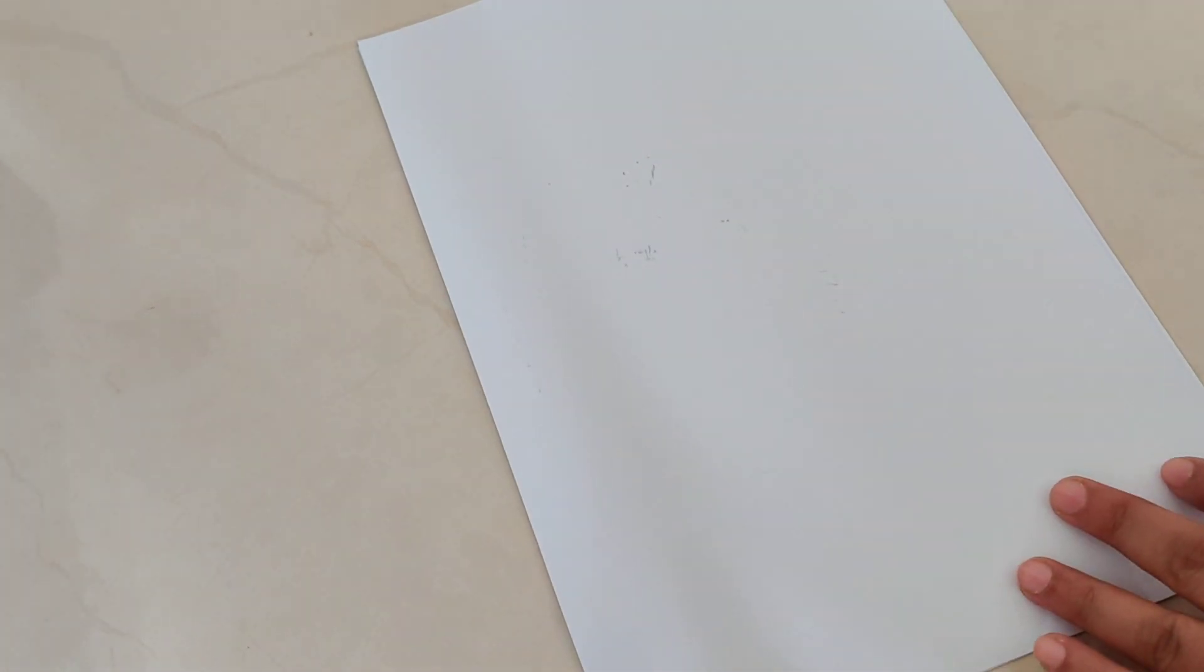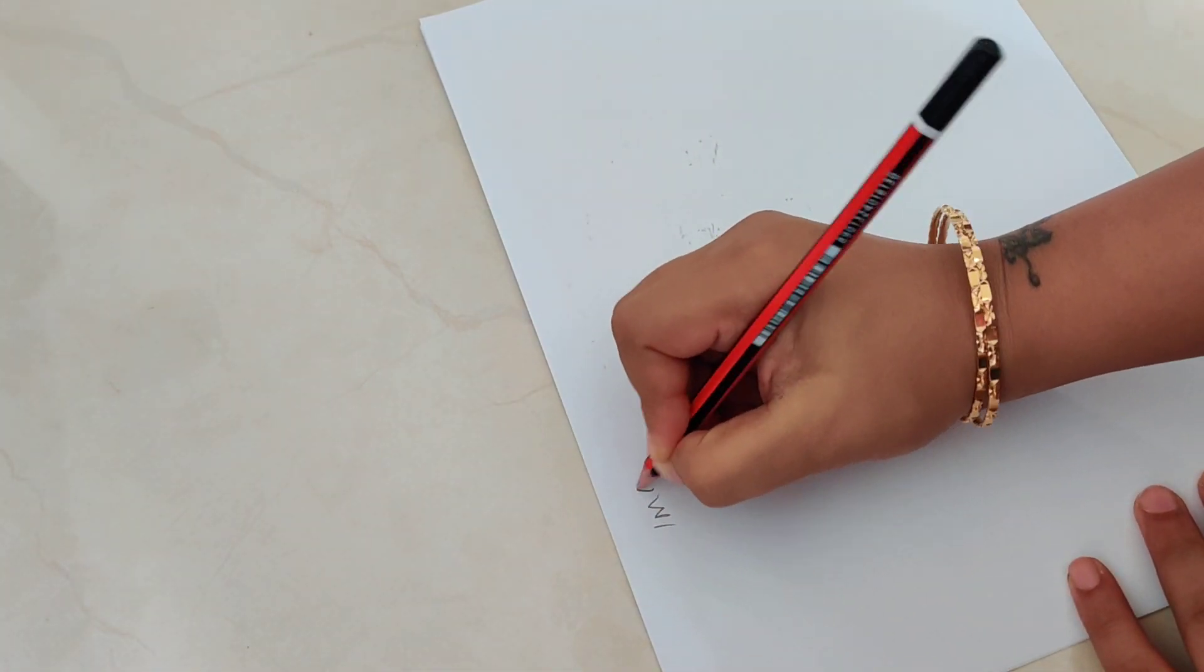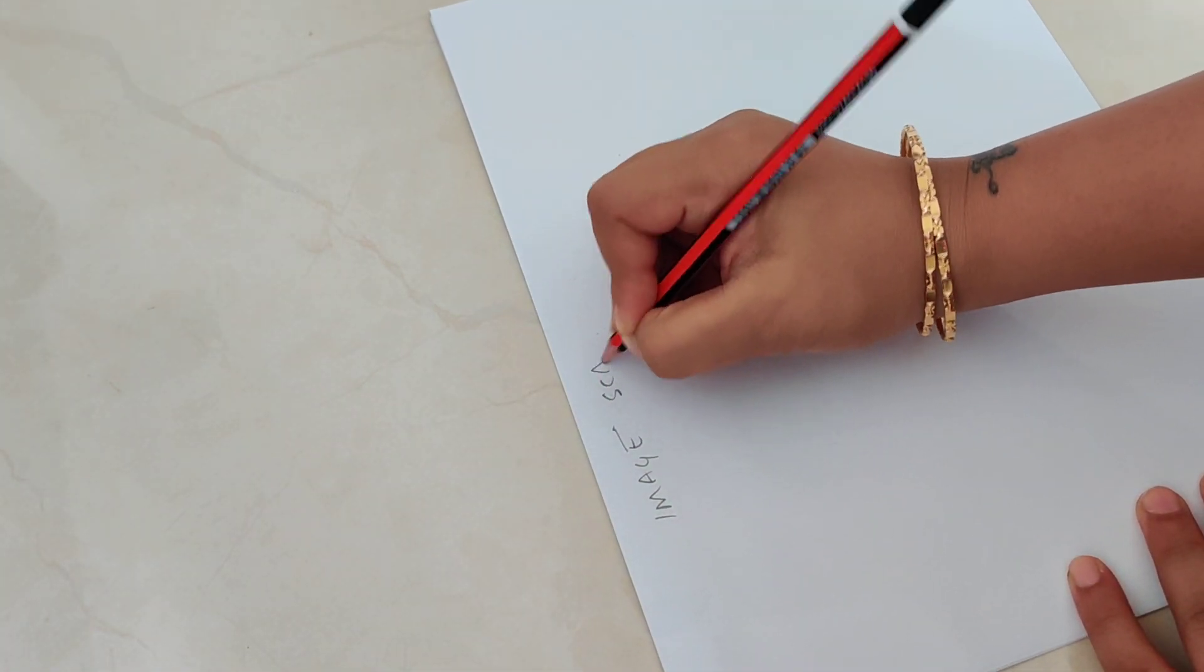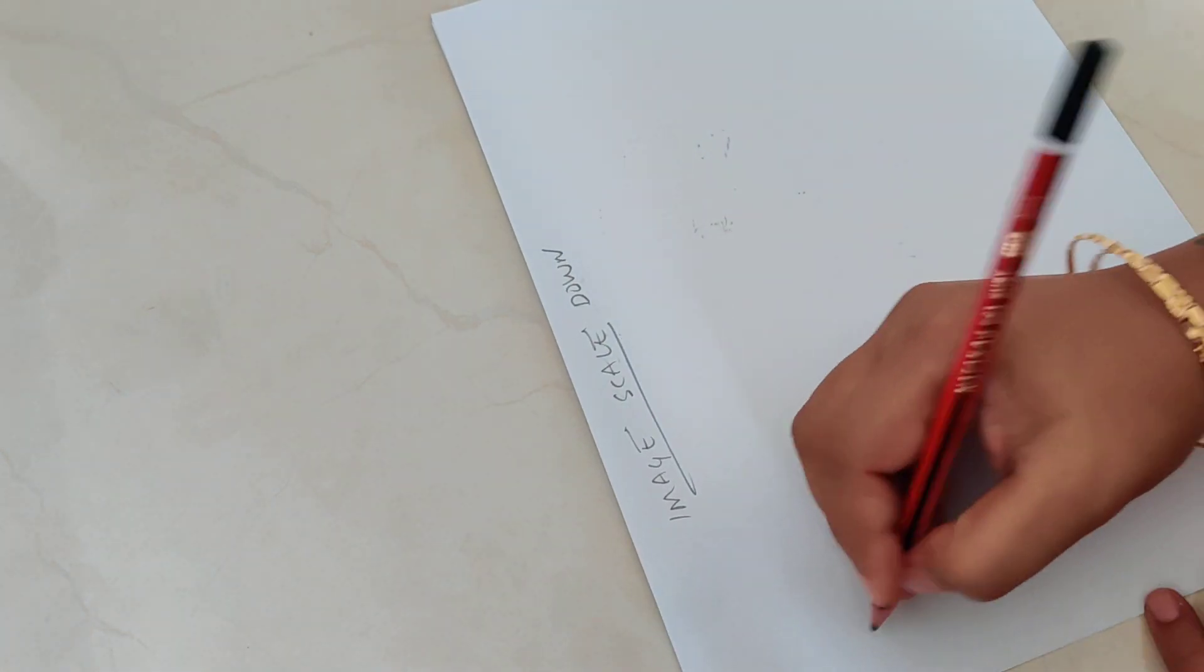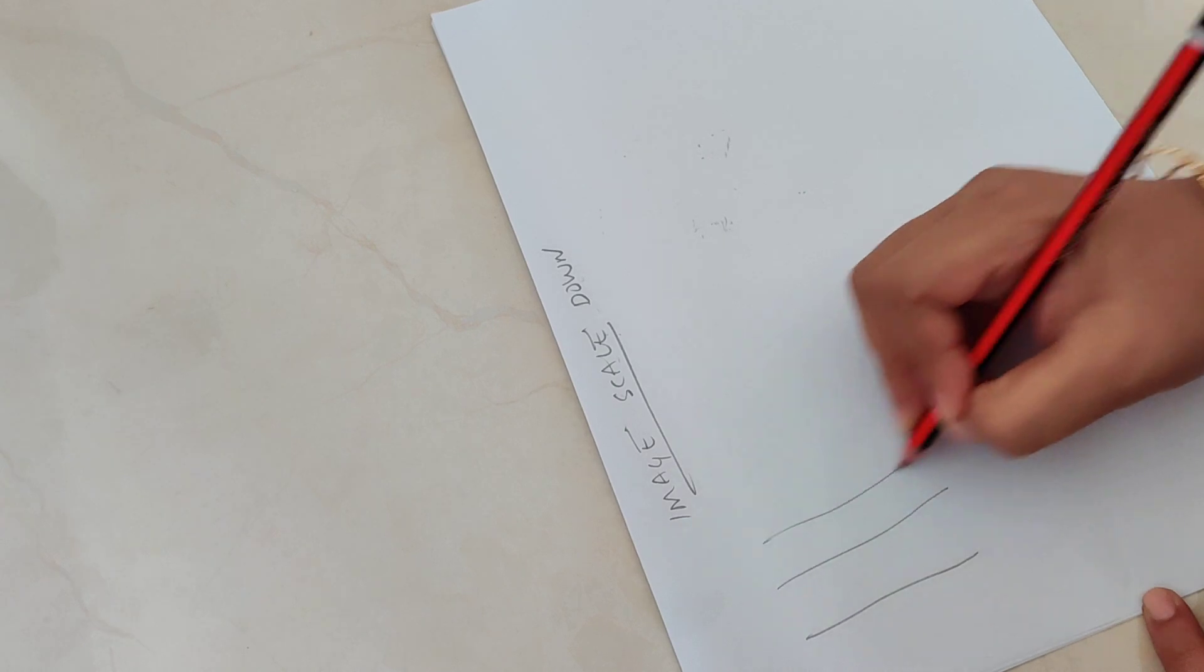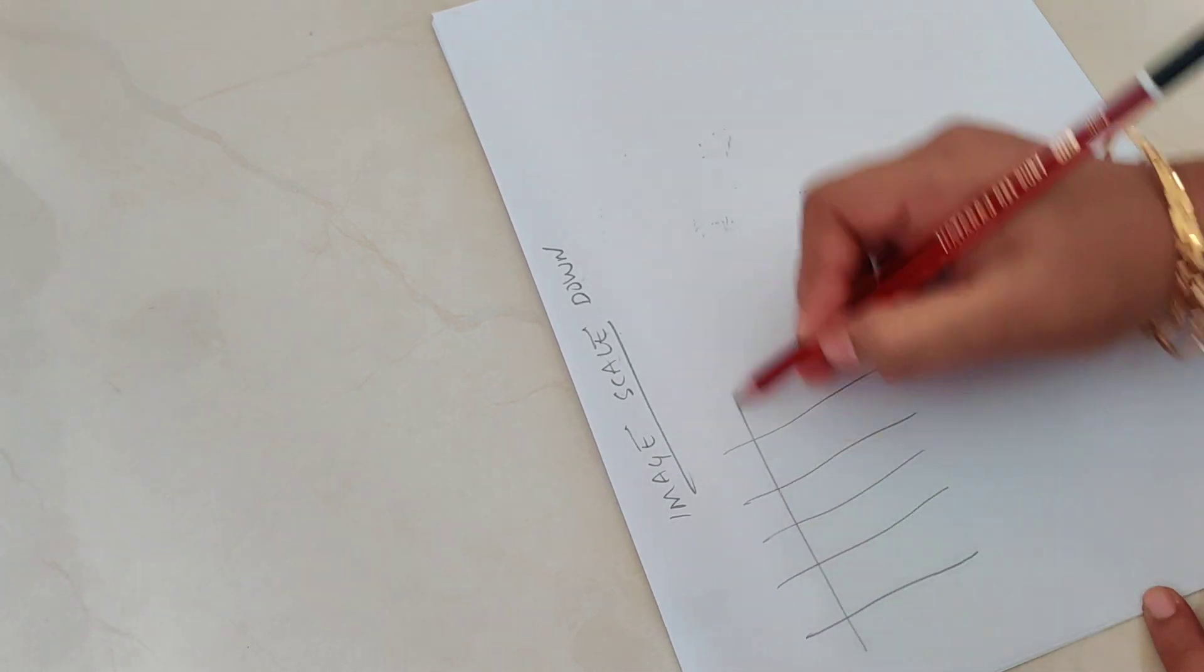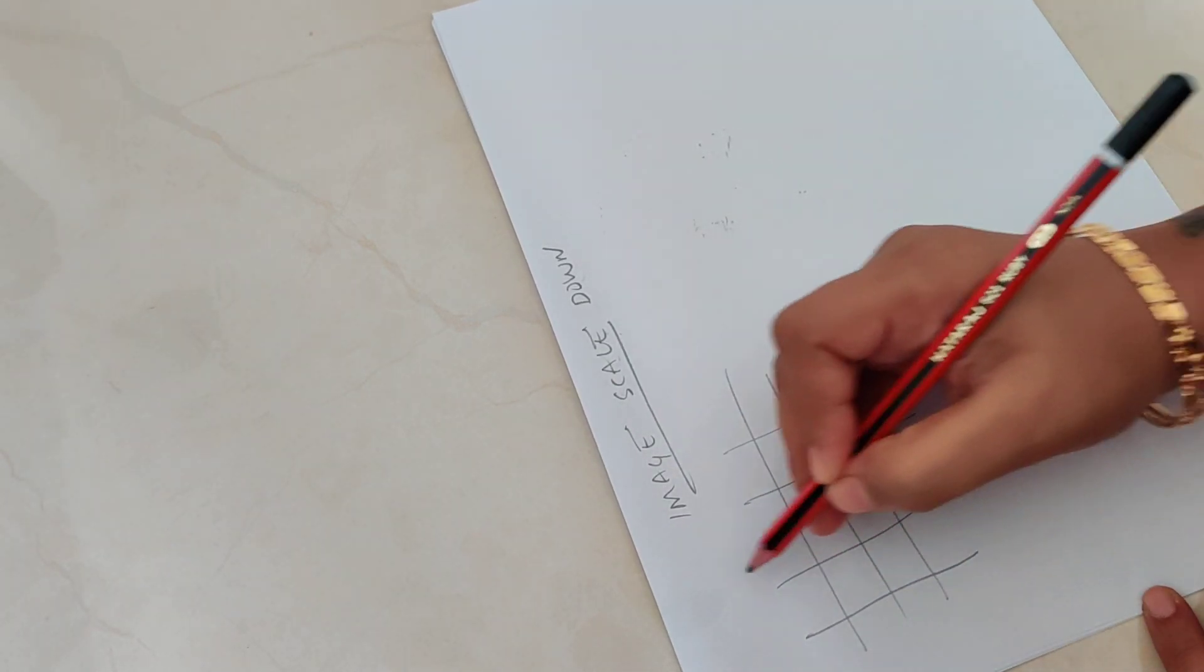Good about the scaling up. But how does image scale down work? Let's say you have 5 cross 5 pixels. For simplicity let us take 4 cross 4.